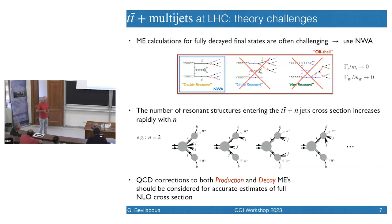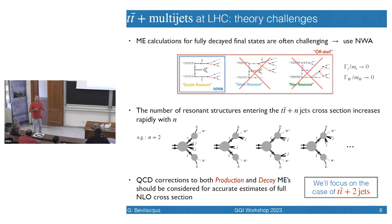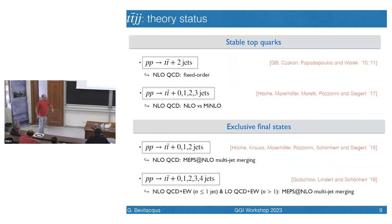Finally, when you go beyond leading order in perturbation theory and apply QCD corrections, in order to be fully consistent, you should apply them not only to the production matrix element but also to the decay. This is important for accurate estimates of the full NLO cross-section. These considerations are valid for any tt̄ plus N-jet, but in the following we restrict the focus to tt̄ plus 2 jets, for which I'm going to present some practical phenomenological results.